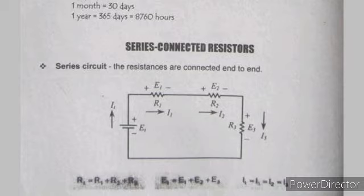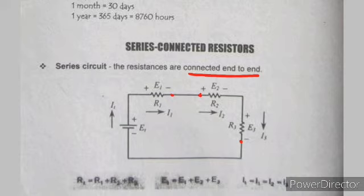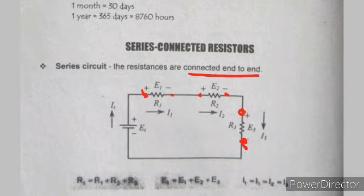Next topic: series connected resistors. In a series circuit, resistors are connected end to end — meaning the end of one is connected to the end of the next, forming a single loop. Current flows through all of them.